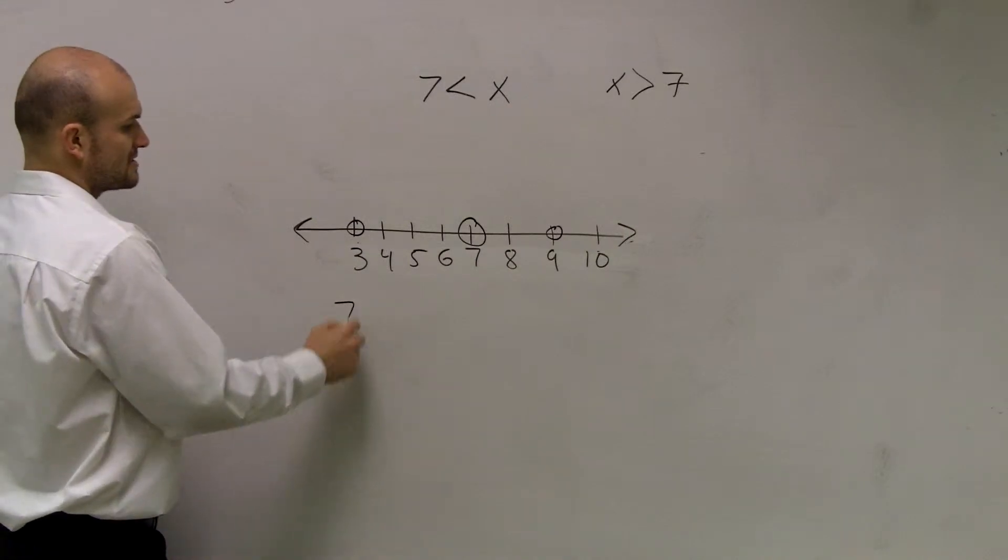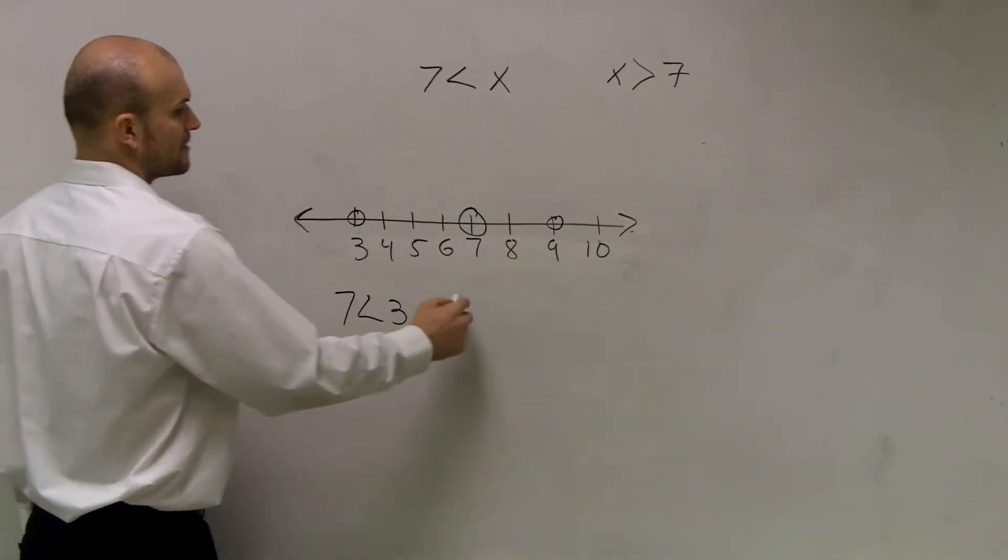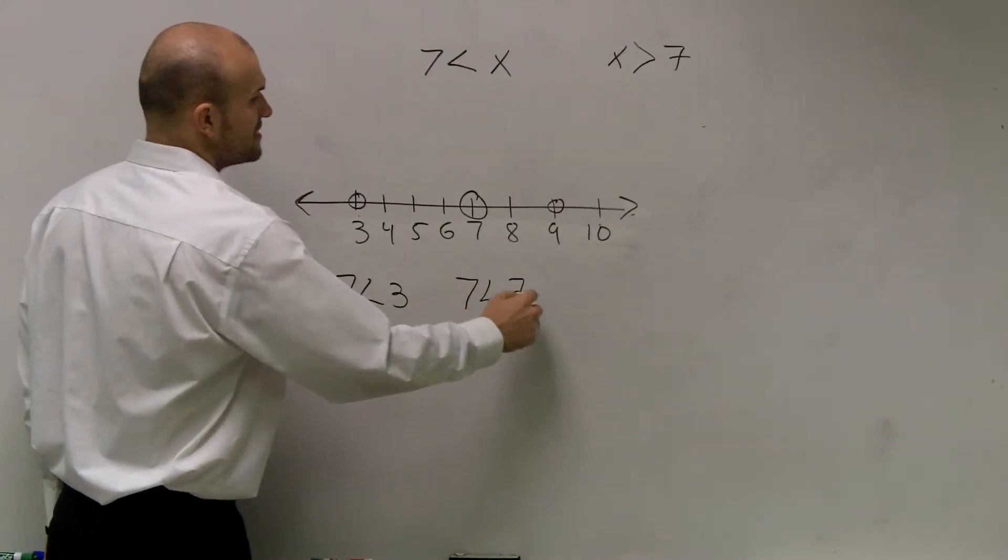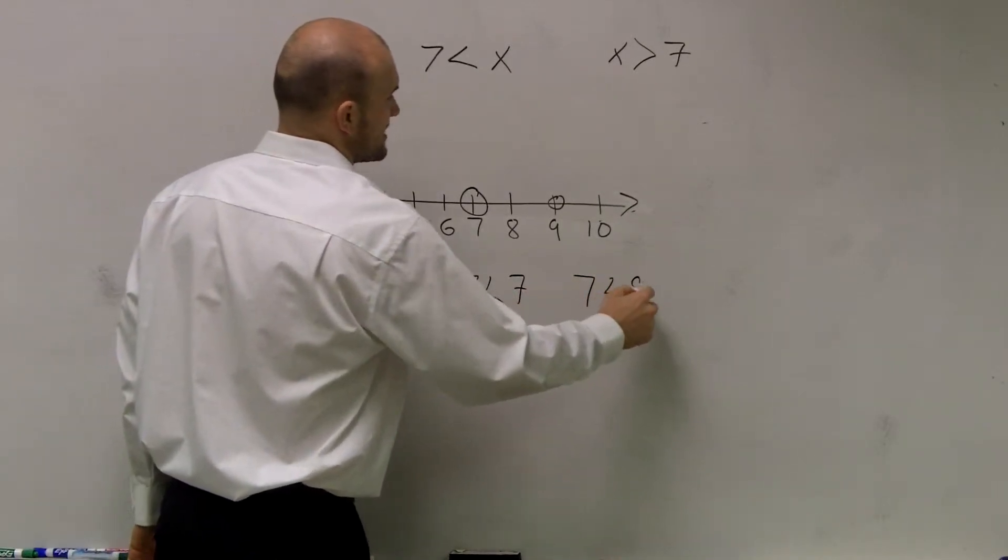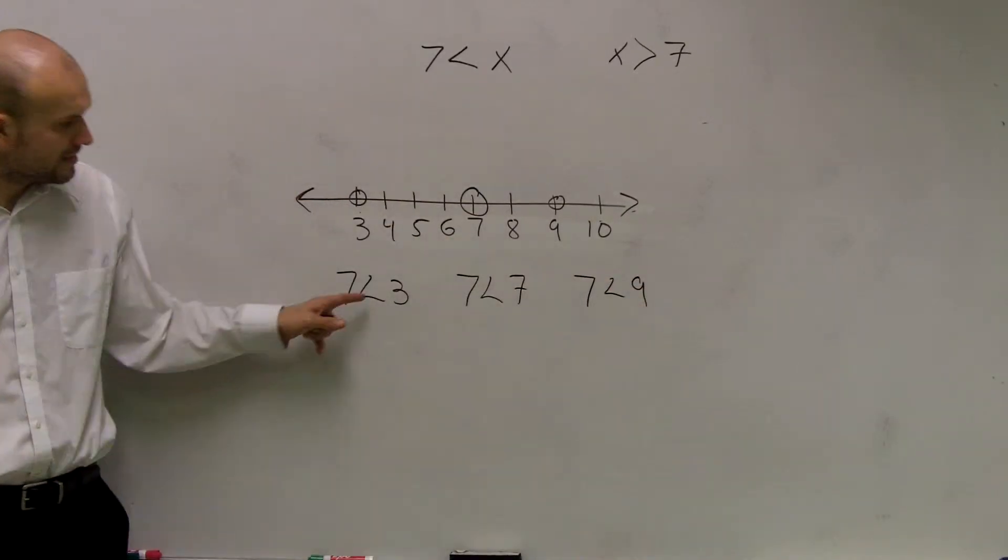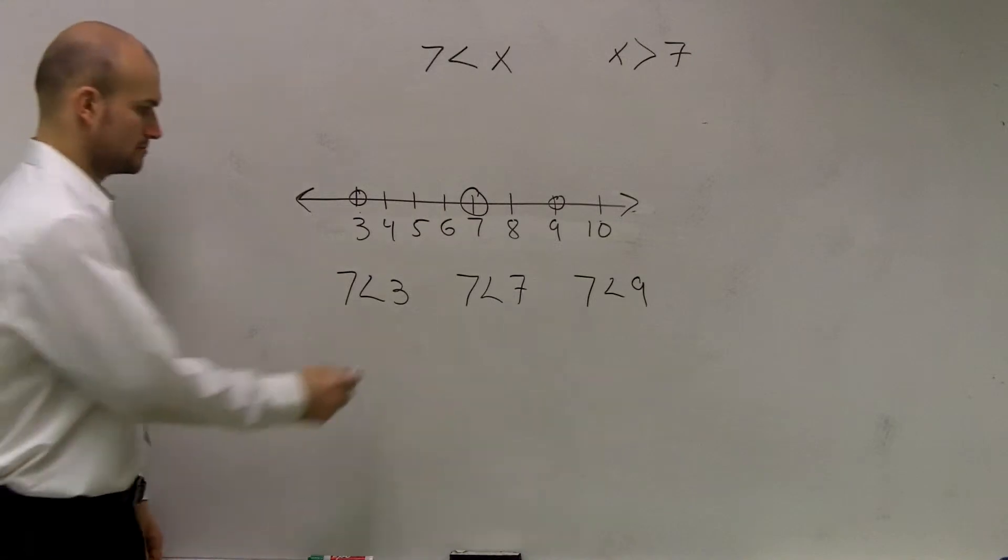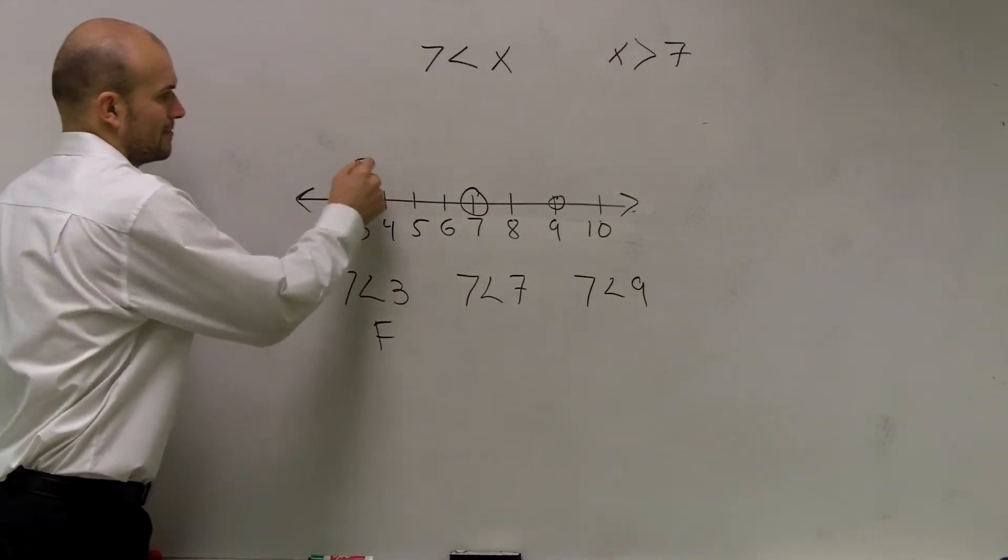So you say, 7 is less than 3, 7 is less than 7, and 7 is less than 9. Now, is 7 less than 3? Yes. False, right?